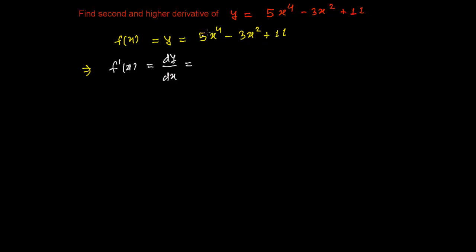Let's find the first derivative. 5 times 4 is 20, and the power is reduced by 1 so it becomes x cubed. The next term gives 6x, and the derivative of the constant 11 is 0. So this is your first derivative: 20x cubed minus 6x.